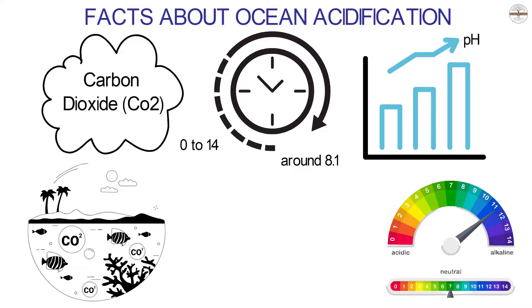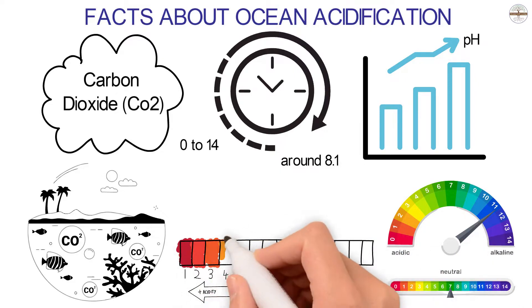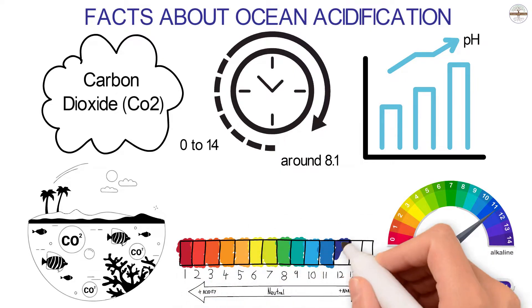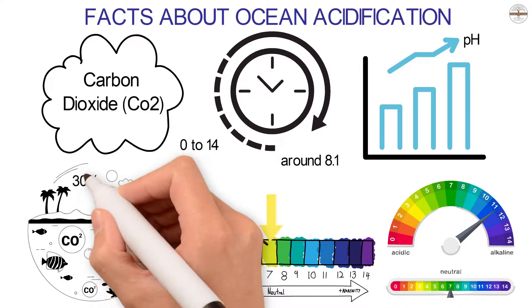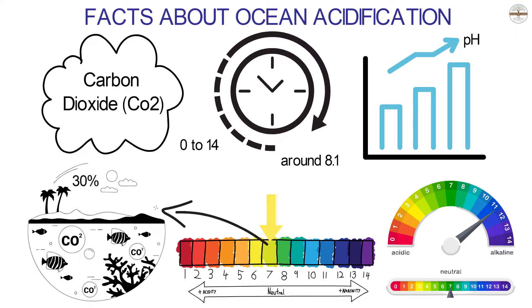When CO2 dissolves in the ocean, it makes the water acidic. When something has a pH value below 7, it's acidic. Scientists call the lowering of the ocean's pH ocean acidification. This change in ocean acidity changes the chemical properties of ocean water. A lot of research shows that the ocean is 30% more acidic than it was 200 years ago.